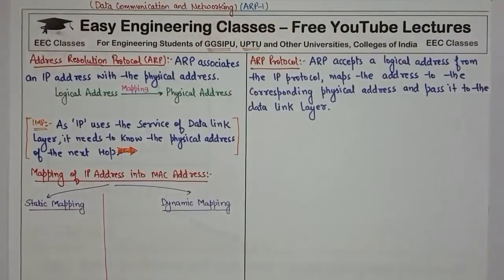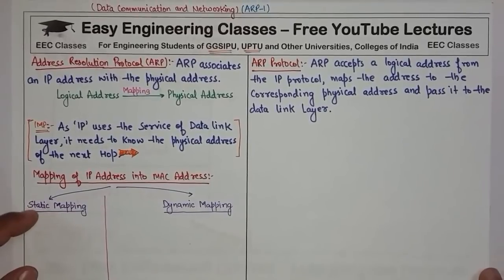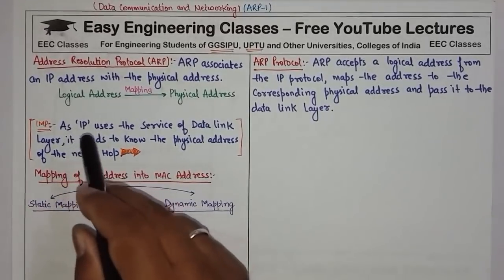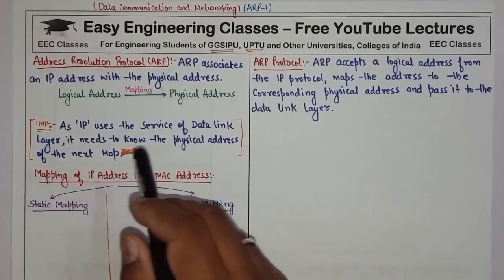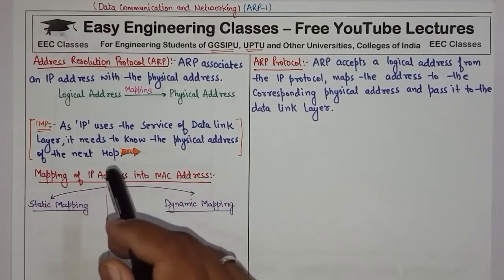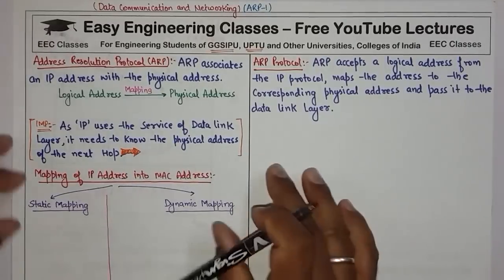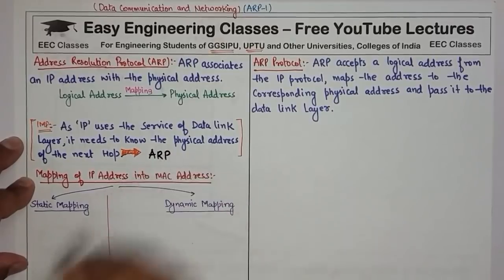Hello everyone! In today's video, we will see Address Resolution Protocol, or ARP. Since the Internet Protocol uses the service of the Data Link Layer, it needs to know the physical address of the next hop. This is done with the use of Address Resolution Protocol, or ARP.